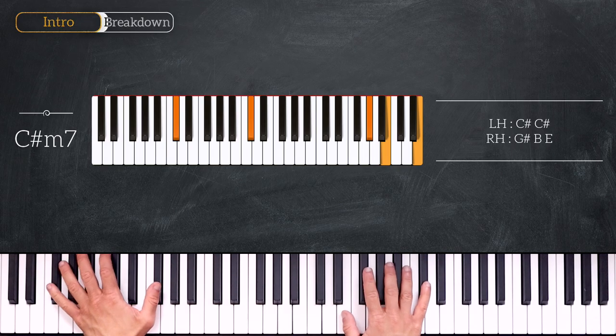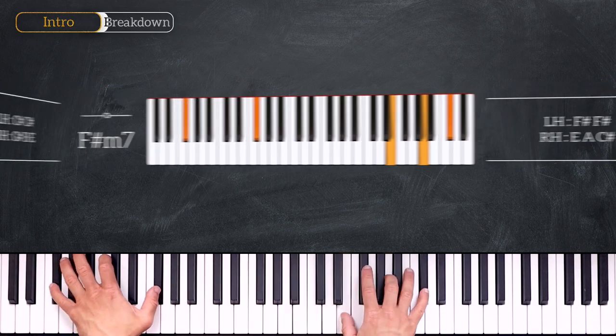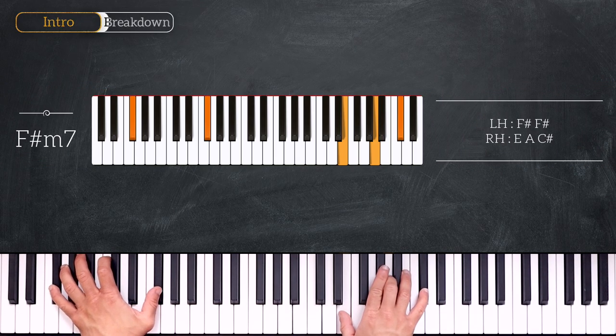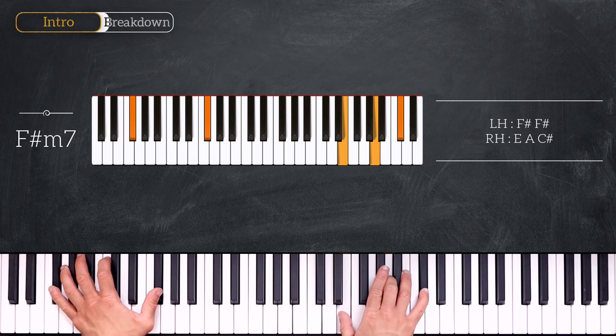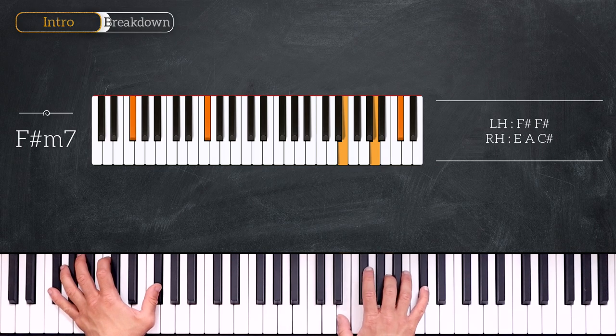From here we'll play F sharp minor 7, which is the second degree. Playing octave F sharp on the left hand and E, A, C sharp.